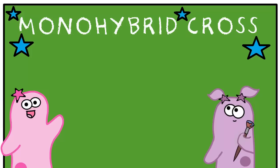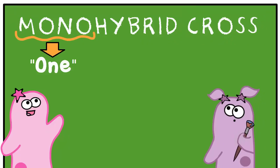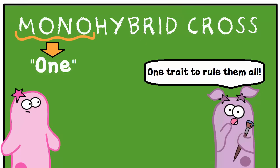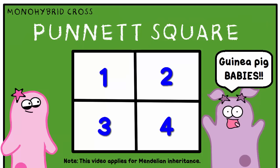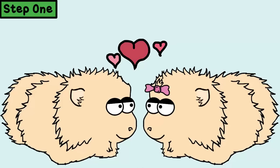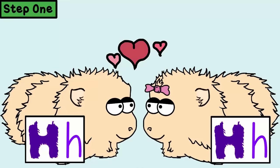So let's try a monohybrid cross. The root 'mono' means one, because it focuses on one trait — in this case, hair. That means a Punnett square with four squares needs to be created. Step one: figure out the genotypes of the parents. Heterozygous means capital H, lowercase h.